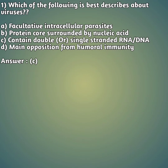Our first question: which of the following best describes viruses? Option A: facultative intracellular parasites. Option B: protein core surrounded by nucleic acid. Option C: contain double or single-stranded DNA or RNA. Option D: main opposition from humoral immunity. The right answer is C — contain double or single-stranded DNA or RNA.